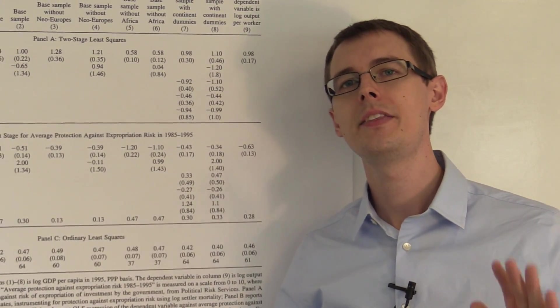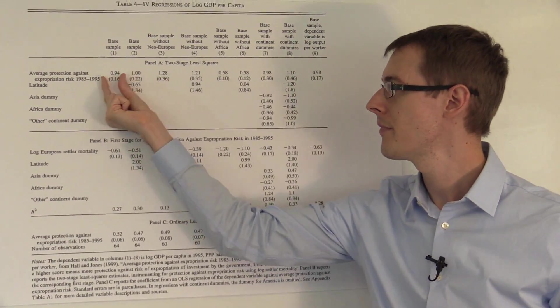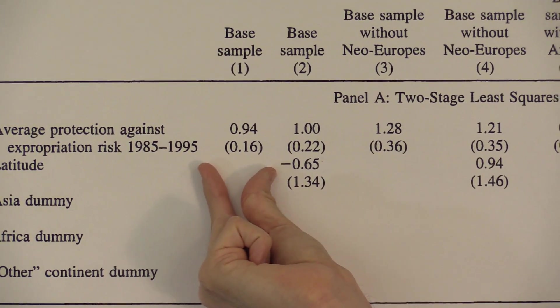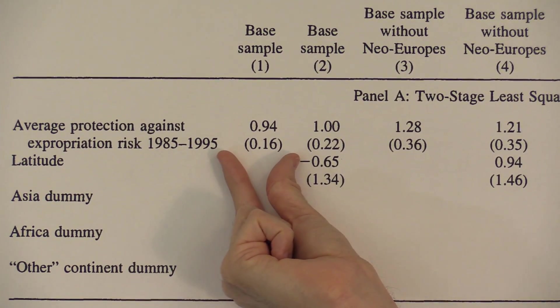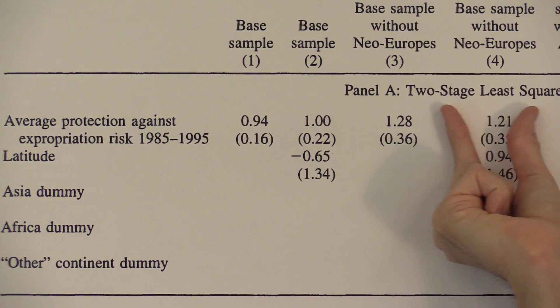Now we're ready to see the main result. That's right here. This first column in the first panel, 0.94.